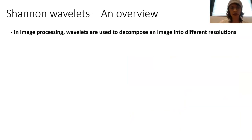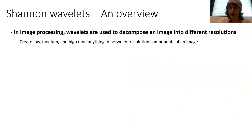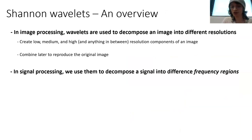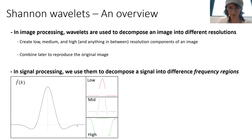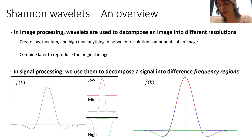Shannon Wavelets. In image processing, Shannon Wavelets are used to decompose an image into different resolutions — we might have low, medium, and high resolution components. So you'd have your coarse graining, fine graining, and medium graining of your image, decomposed into all these different pictures. Then if you want to combine them later to reproduce the original image, you can. In signal processing we do basically the same thing, but to a signal with different frequency regions. You decompose a signal into its low, medium, and high frequency components, and later you can put them all back together to reconstruct the original signal.